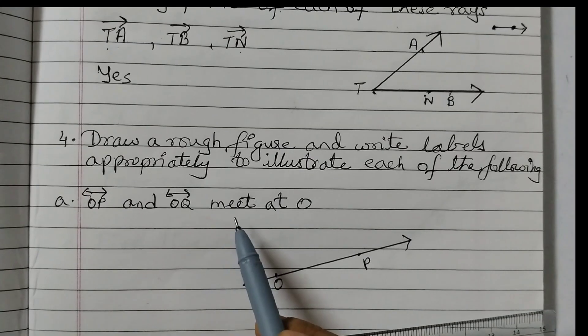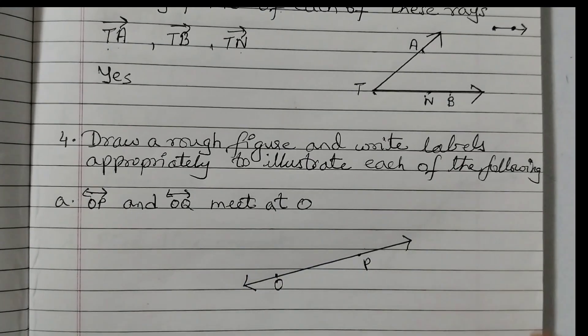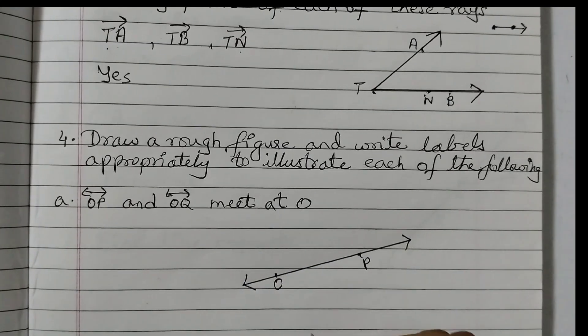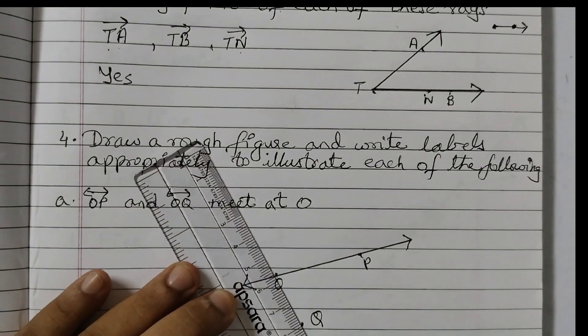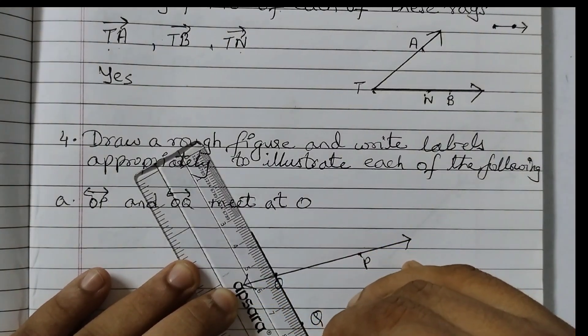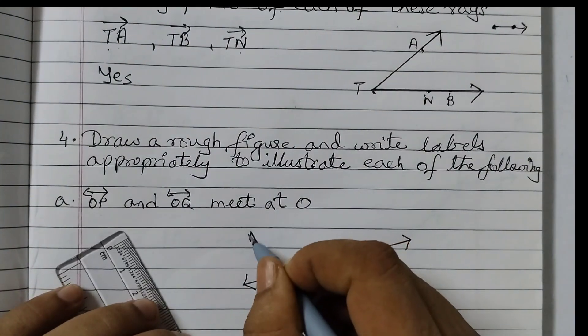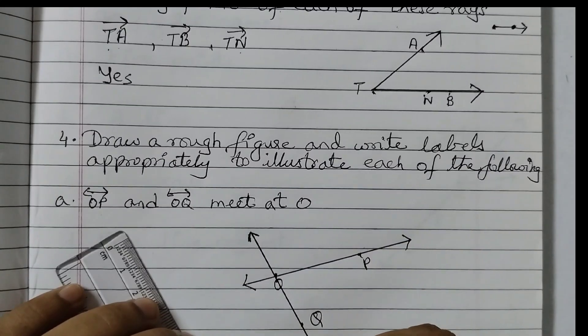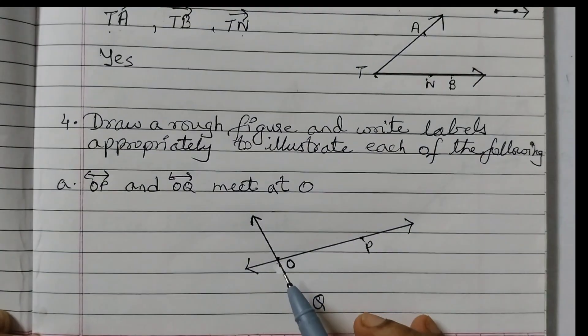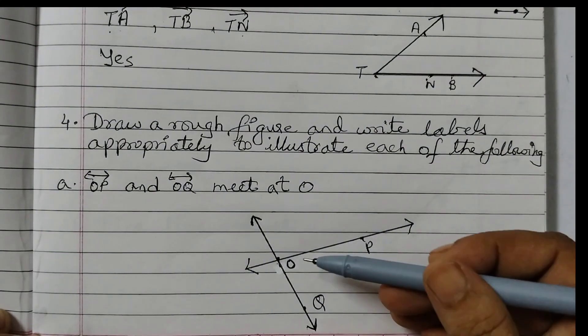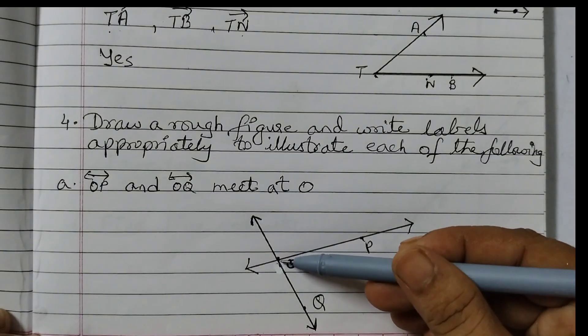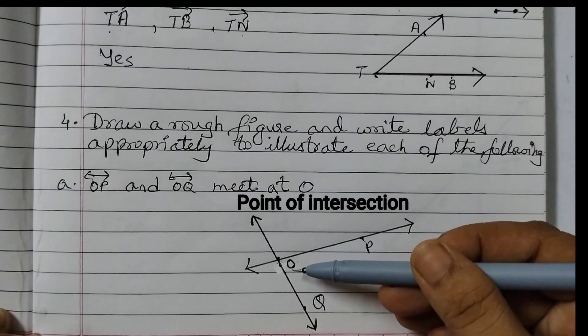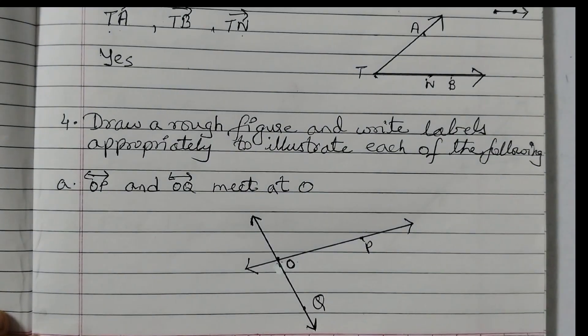Now OQ meet at O. So take a point Q somewhere here. Let's say this is point Q and join OQ. Again, it's very important to draw the arrow head. So now OP, line OP and line OQ it meets at point O. This is a common point, the point of intersection for both of these lines.